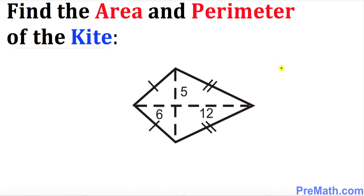Hello again everyone. In this video tutorial we are going to find the area and the perimeter of this given kite. Let's go over this kite briefly. Look at this longer side — it is the same as this side. The smaller side is the same as this smaller side. This is the larger diagonal and this is the smaller one, and these two diagonals are perpendicular to each other, meaning they make a 90-degree angle.